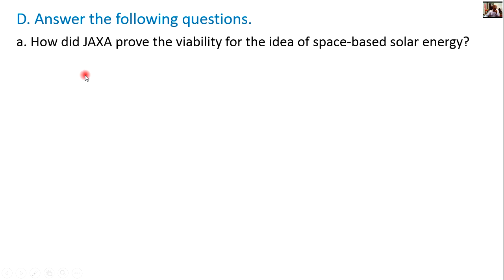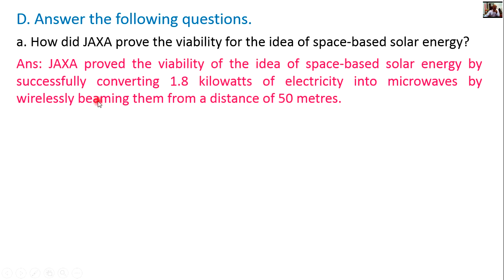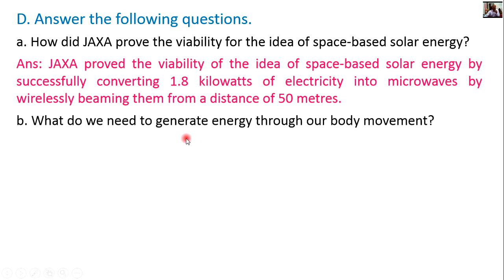Answer the following questions. How did JAXA prove the viability of the area of space-based solar energy? JAXA proved the viability of space-based solar energy by successfully converting 1.8 kilowatt of electricity into microwave and wirelessly beaming it from a distance of 50 meters.